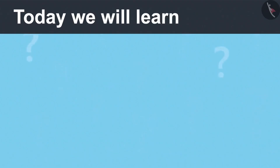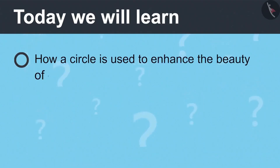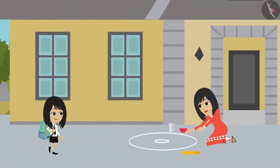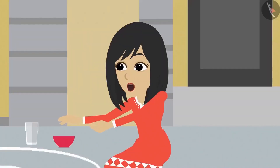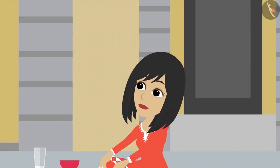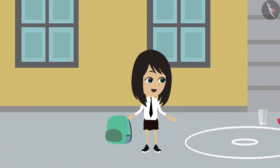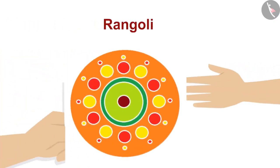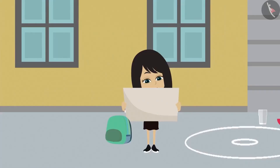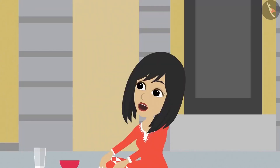Today we will learn how a circle is used to enhance the beauty of objects. Mommy, what are you making? I am making a rangoli. Come and help me make the rangoli. How can I help? I do not know how to make a rangoli. I will make the rangoli. You just copy the design from this paper onto the ground with this chalk. There are many circles made in it. Can we make a rangoli with circles? Yes, you can use any shape for the design, and circle is also a shape.